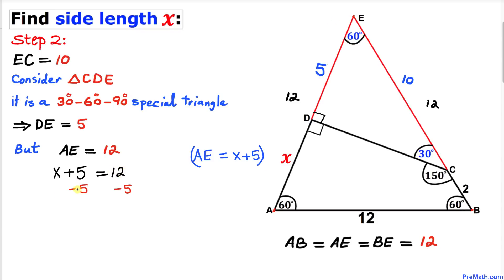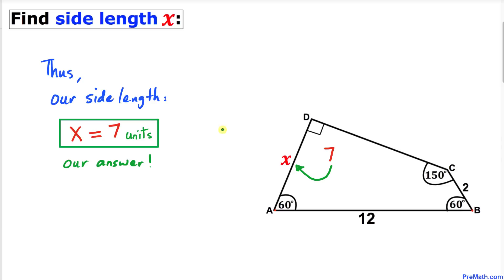Subtracting 5 from both sides, the positive 5 and negative 5 cancel, and we get x equal to 7 units. So side length x turns out to be 7 units. Thanks for watching, and please don't forget to subscribe to my channel for more exciting videos!